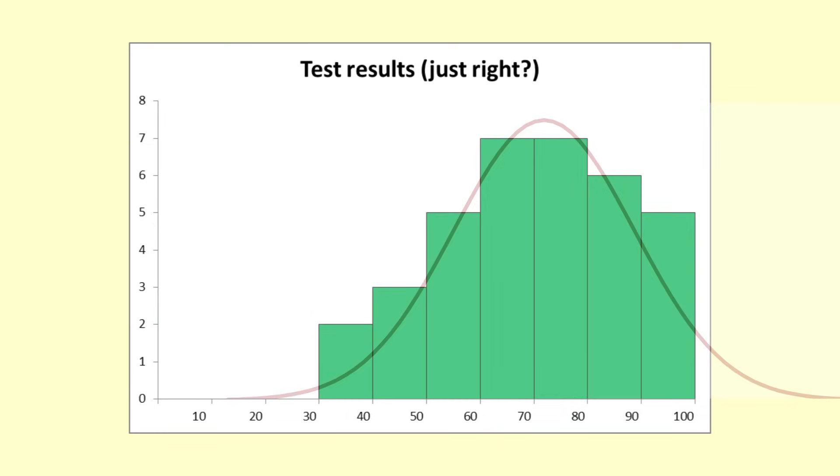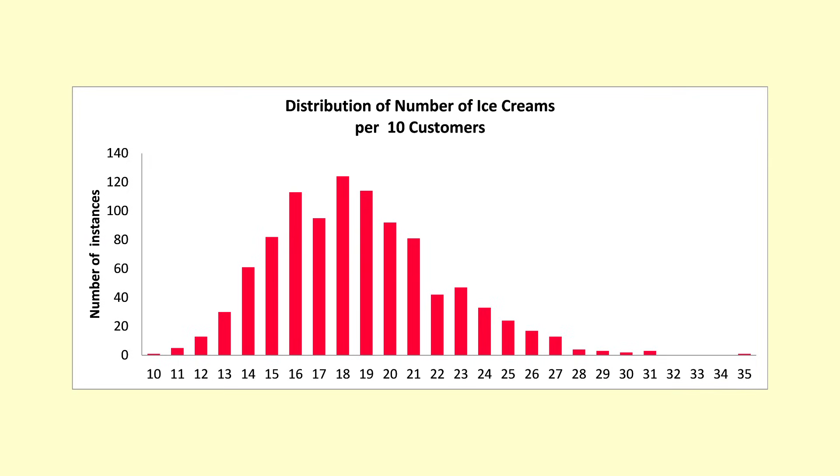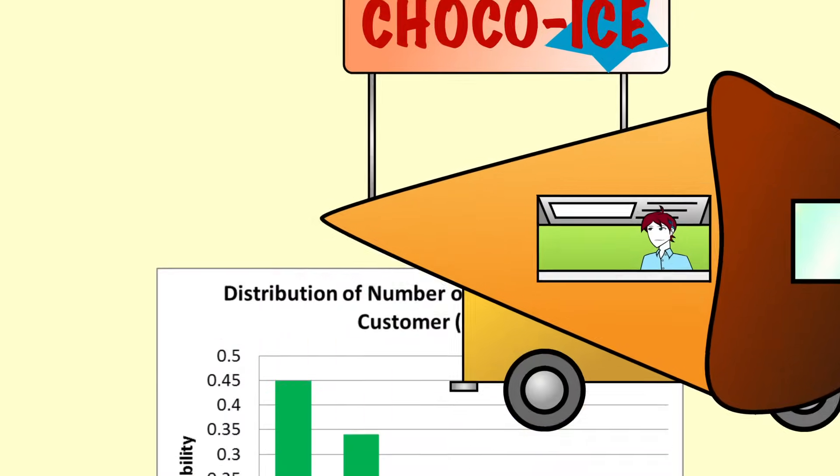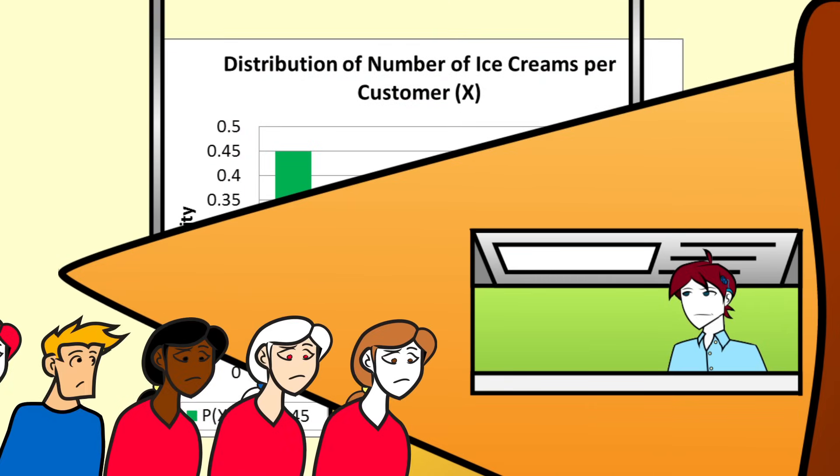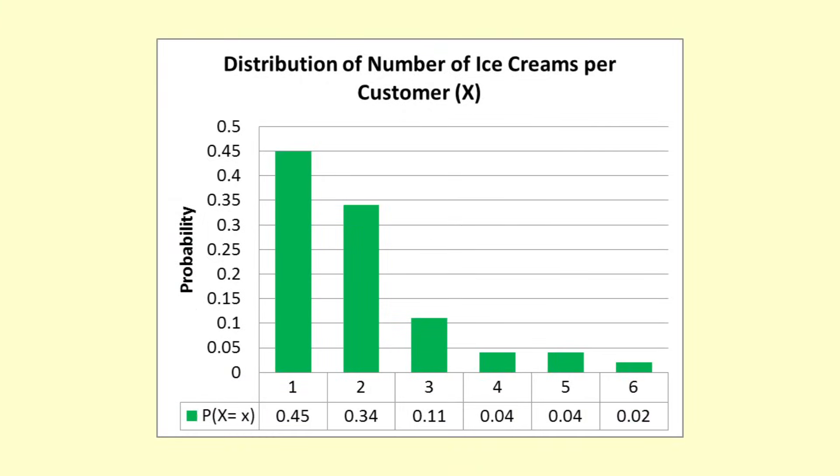But when you add together many occurrences from even non-normal distributions, you tend to get a normal distribution pretty quickly. Here is an example of what I mean. This is the distribution of number of ice creams purchased per customer at Luke's ice cream stand. It is based on data he has collected over the last few weeks. It is clearly nothing like a normal distribution.